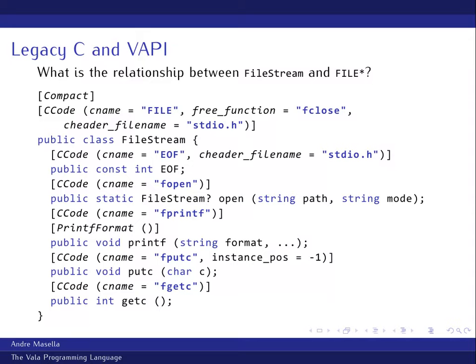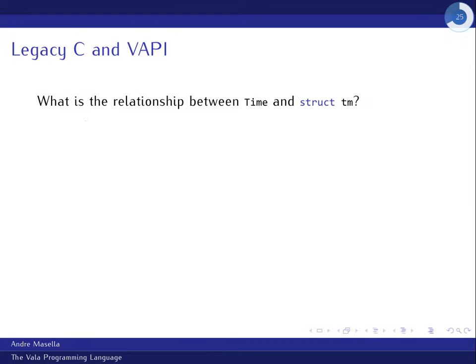You can specify a lot of information about arrays in VAPI bindings. If you're passing an array, Vala by default assumes you have the array followed by an int for the array length. If you're returning an array, it assumes a pointer to the array and a last argument as an int pointer for where the length goes. If that's not how it is, you can specify exactly what you need through C code attributes.